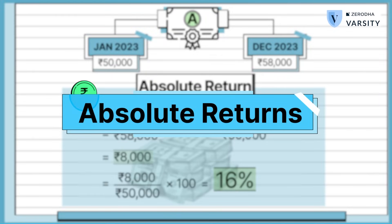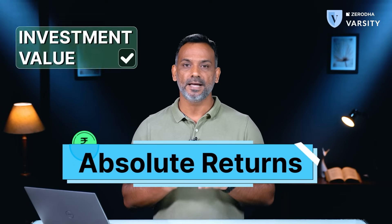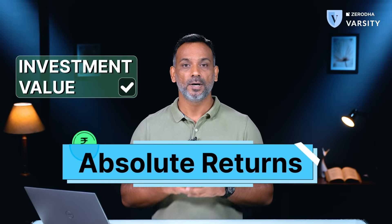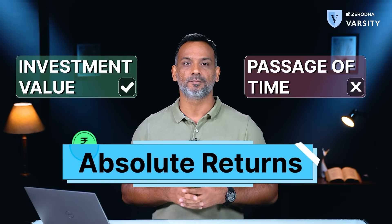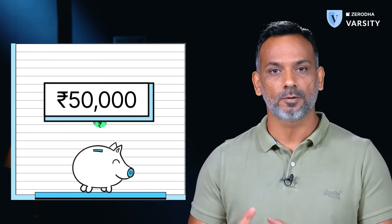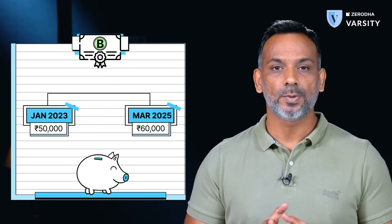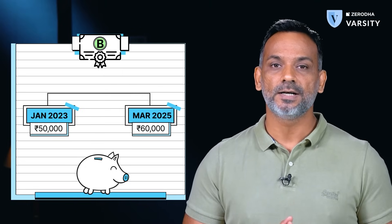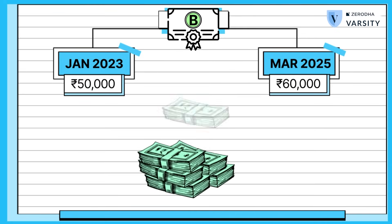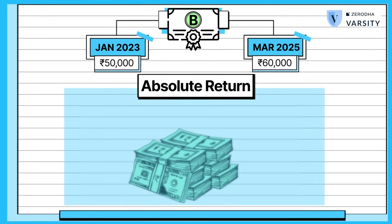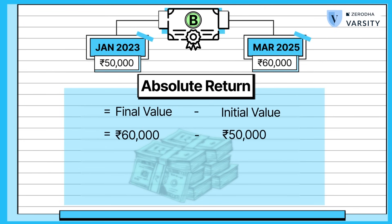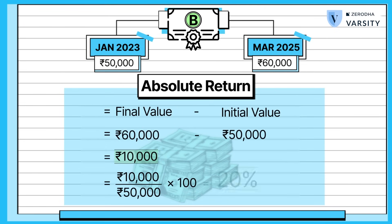We call this the absolute return. When calculating the absolute return we only consider the investment value but we do not consider the passage of time. Now consider another example: you invest 50,000 in Stock B in January 2023. By March 2025 the investment grows to 60,000. You take the difference between the ending value and the starting value, divide by the starting value, multiply by 100, and you get the value.